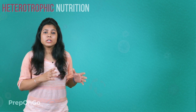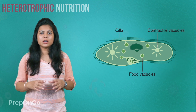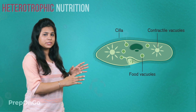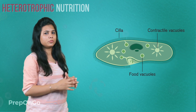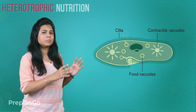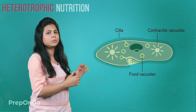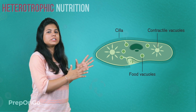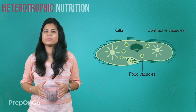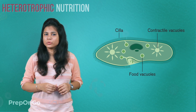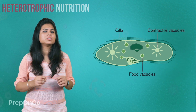Similarly, there is paramecium, which is also a unicellular organism. Paramecium has a specific spot on its cell surface from where it can take in food. Food is reached by the cell only through the cilia present on the paramecium surface. This cilia helps the cell move to the food particle, and in this way paramecium obtains its nutrition. In simple words, the cilia perform the function of hands.